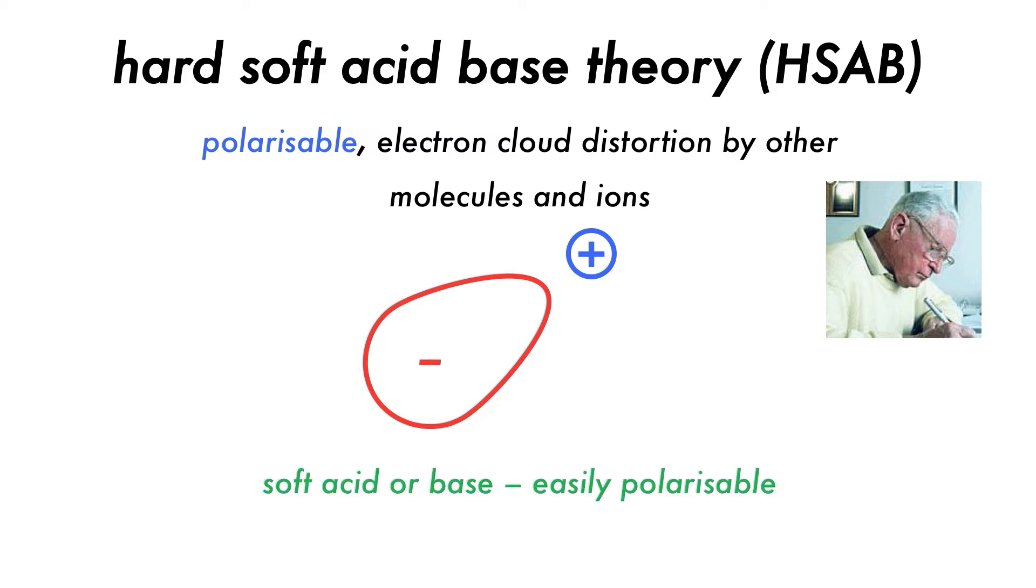A soft Lewis acid or base is one which can be polarized and are typically large with low charge density, making them easily polarizable, like the copper-1 cation, but they can also be molecular, like quinone.